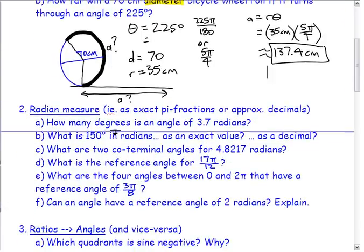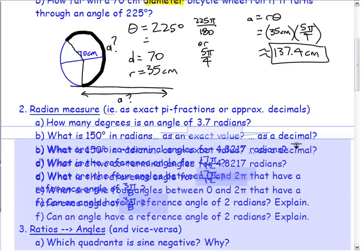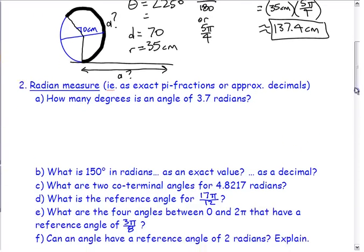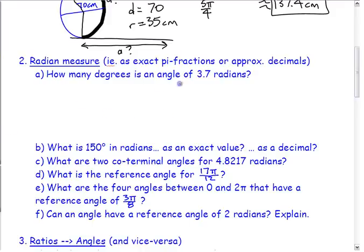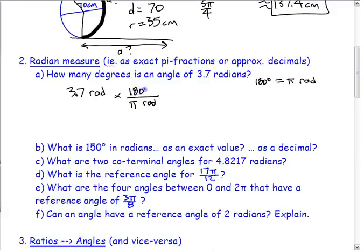Next topic: radian measure — converting between angles in radians and degrees. For example, how many degrees is 3.7 radians? Since it's a decimal and not a recognizable pi-fraction, use the conversion factor: 180 degrees equals pi radians. To convert from radians to degrees, put radians on the bottom and degrees on top, then multiply. So it's 3.7 times 180 divided by pi.